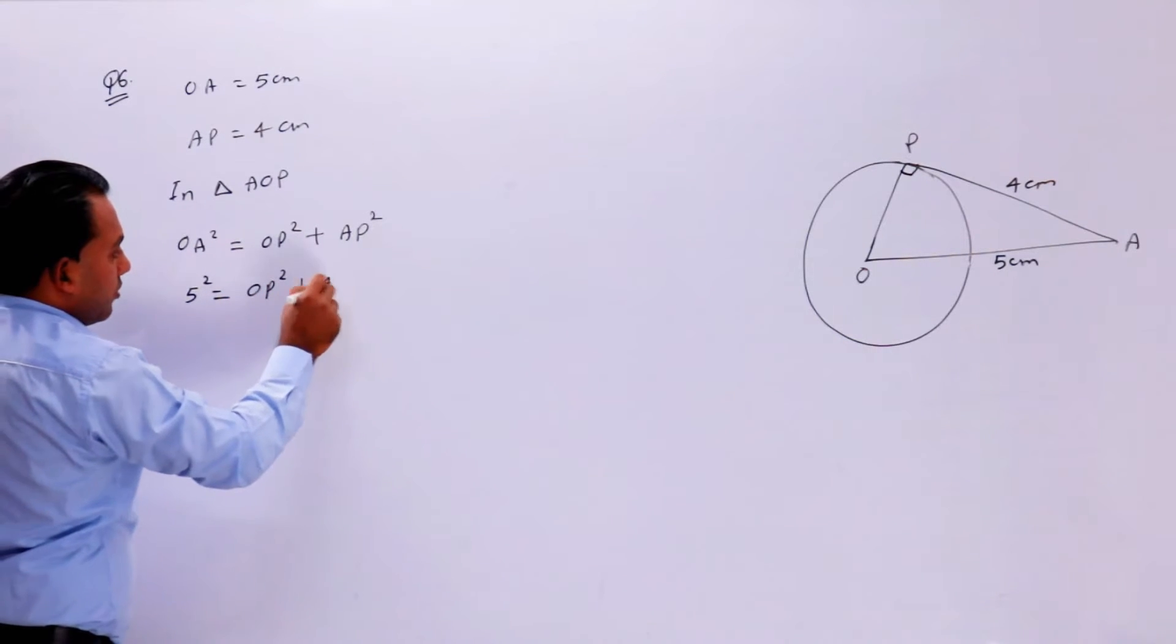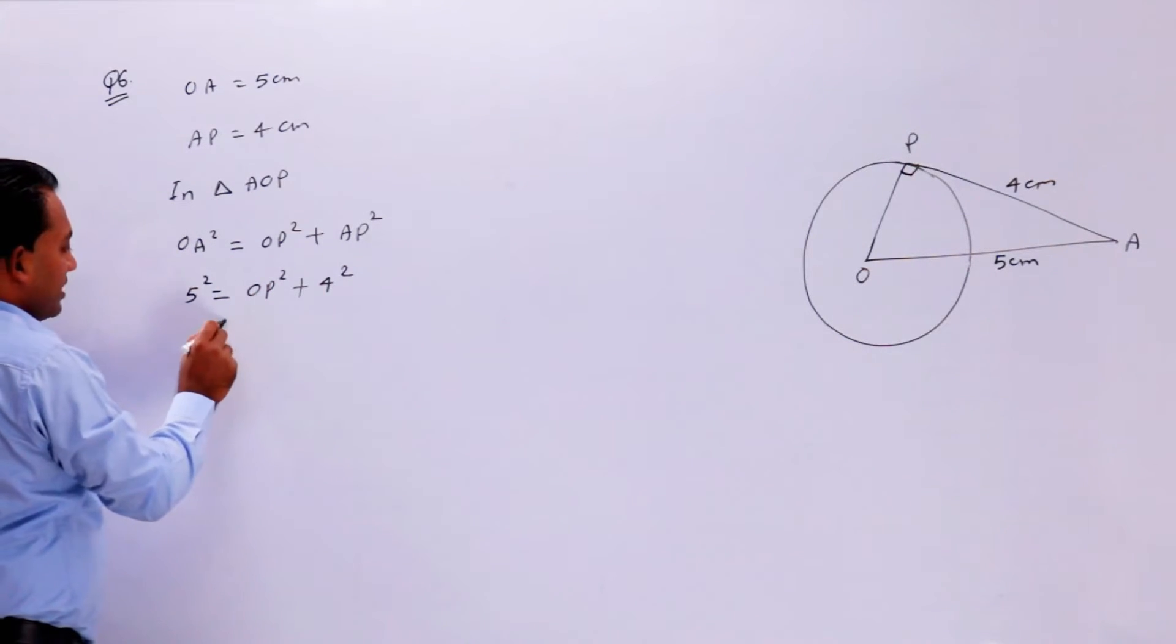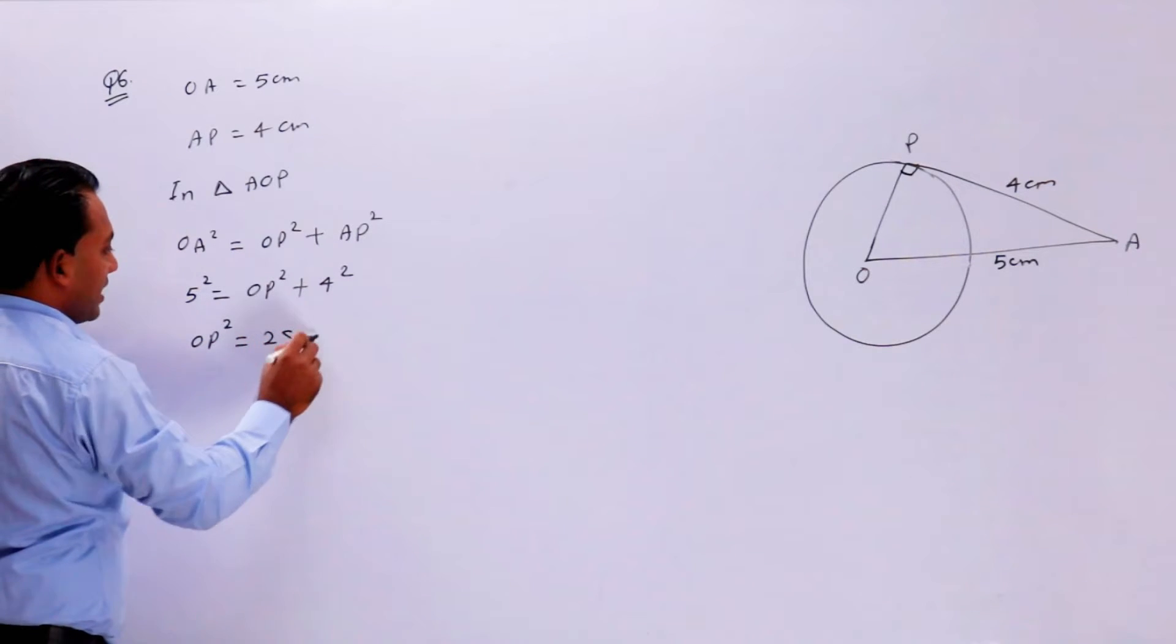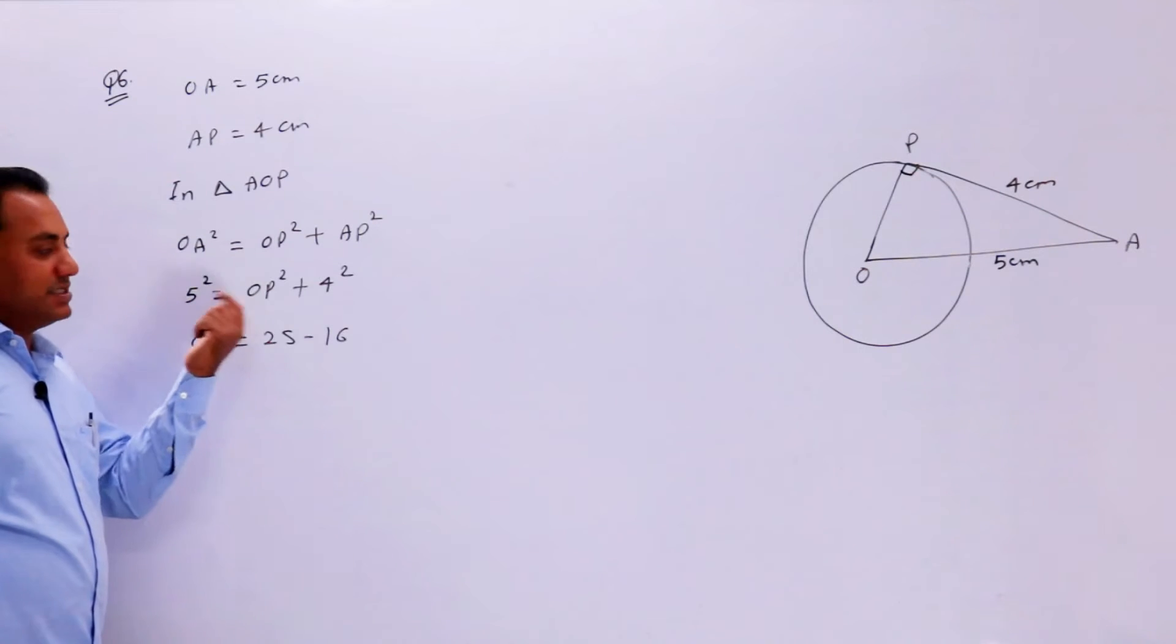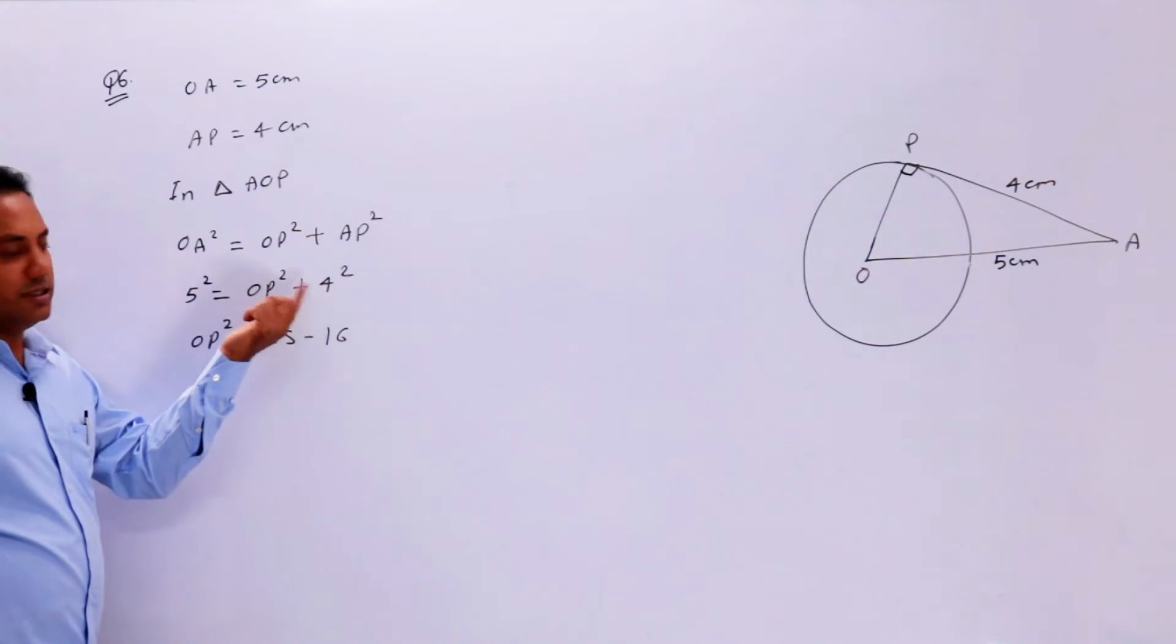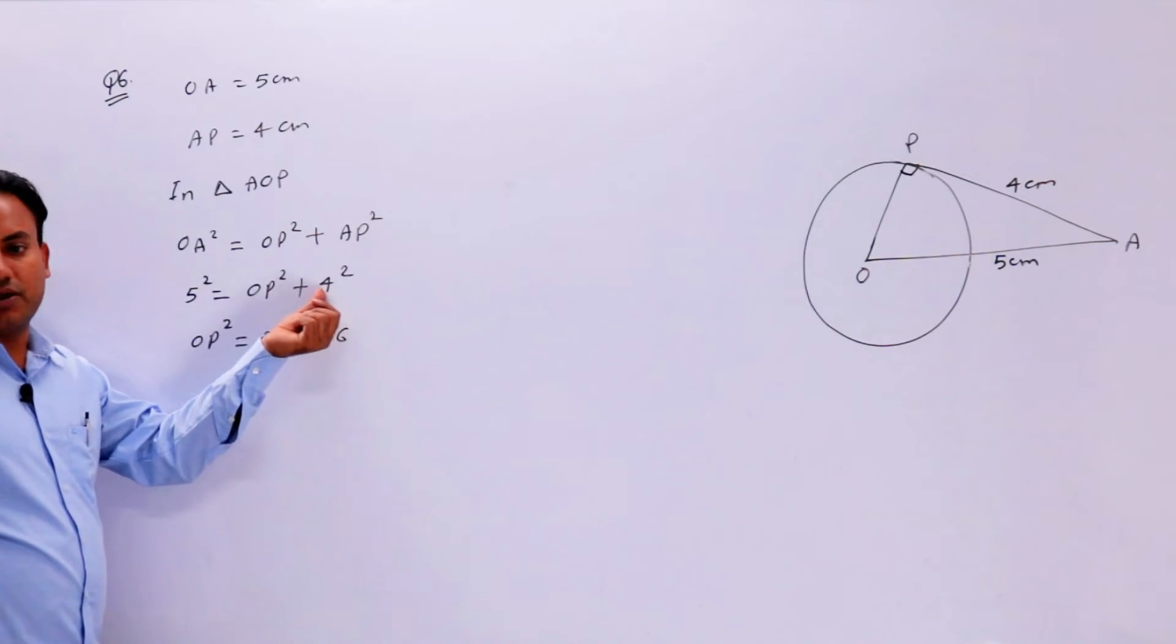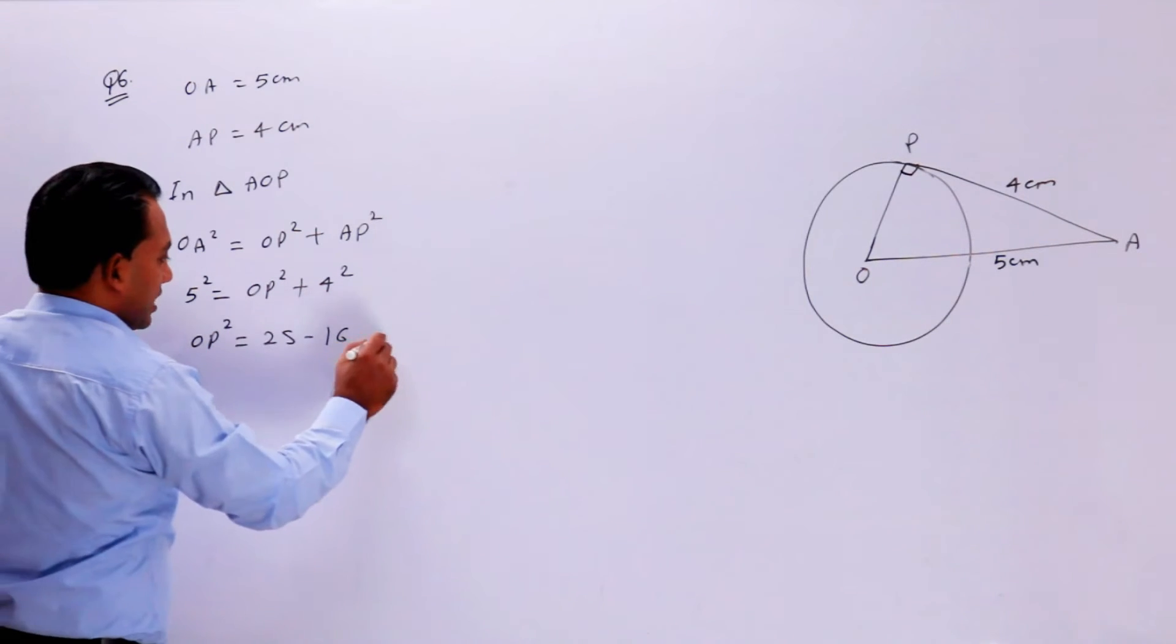AP is 4 square. OP square is equal to 25 minus 16. OP square is equal to 25 minus 16, which is equal to 9.